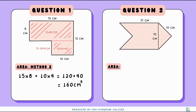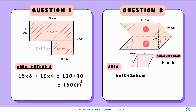Now moving on to area. We can simply cut the shape in half and realize it gives us two identical parallelograms. Working out the area of a parallelogram using height times base: the combined height of both parallelograms is 10 centimeters, so one parallelogram has a height of 5 centimeters. One parallelogram is 5 times 10, and since there are two of them, we multiply by 2. So we have 50 times 2, which gives us 210 centimeters squared. Wait — one parallelogram is 5 times 21 equals 105 centimeters squared; since there are two, 105 times 2 gives us 210 centimeters squared.